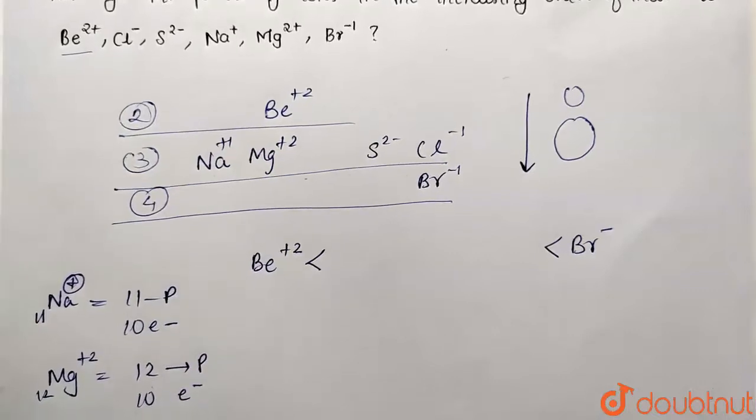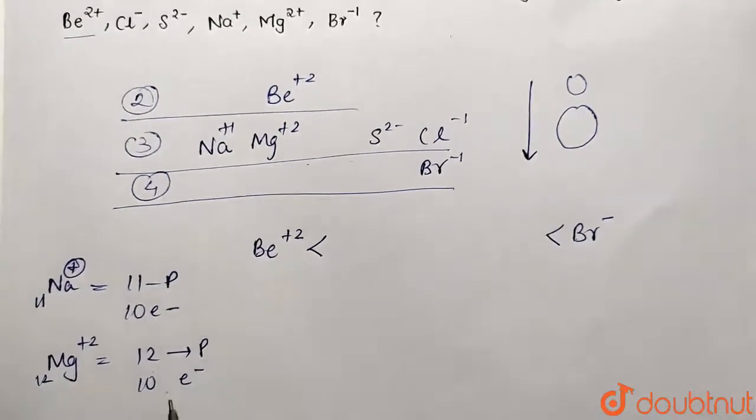So which will be having smaller size? Obviously this one, because 12 protons are going to attract these 10 electrons. 12 protons are attracting 10 electrons with much more larger force.